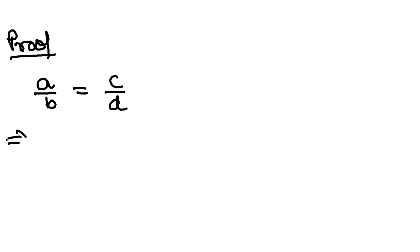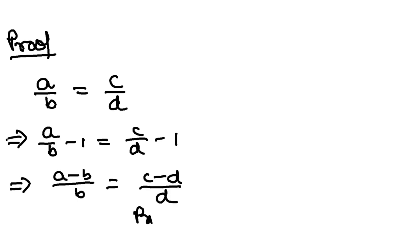To prove this, all you have to do is subtract one from both left and right sides. I will take LCM here. This will be (a-b)/b and this will be (c-d)/d. This is the proof for dividendo. The proof is very easy.